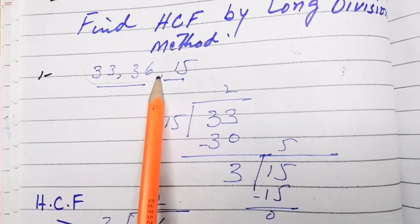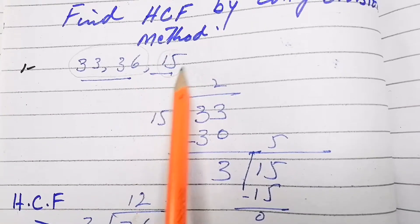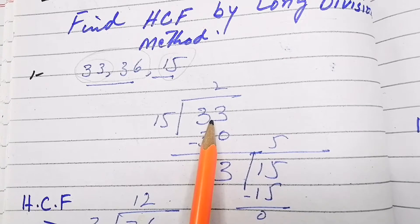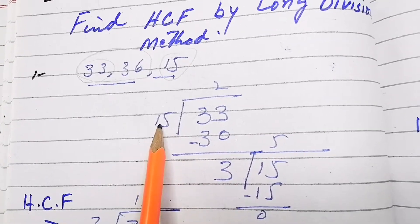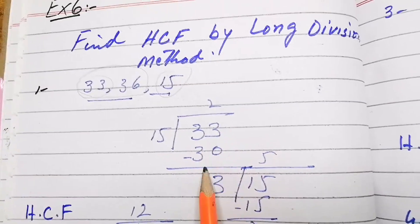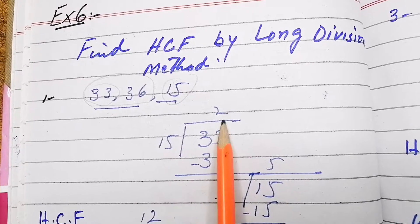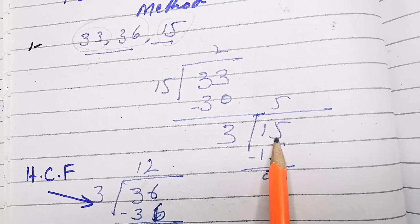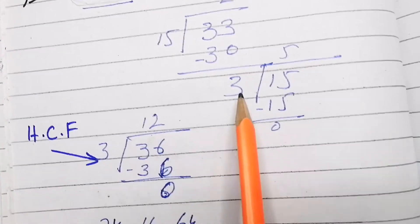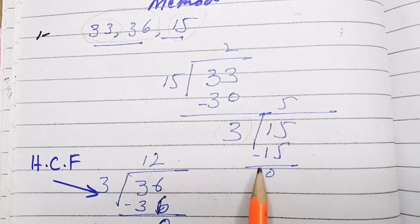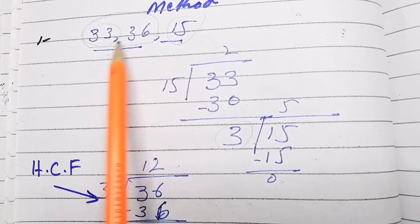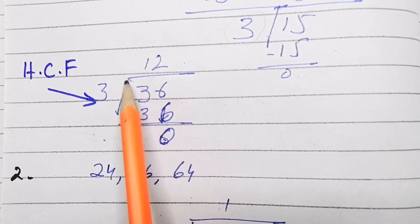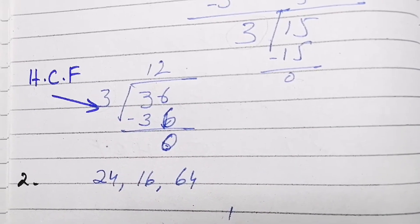You take any two numbers — you can take the smallest number and the greatest number. For 33 and 15, the bigger number is written as the dividend and the smaller one as the divisor. We divide: 15 into 33, remainder is 3. Then bring 15 as the dividend in the next step. 3 fives are 15, remainder is 0. Now take the third number 36. There were three numbers; we have taken two and 36 is left. Divide 36 by 3: 3 twelves are 36. So HCF is 3.